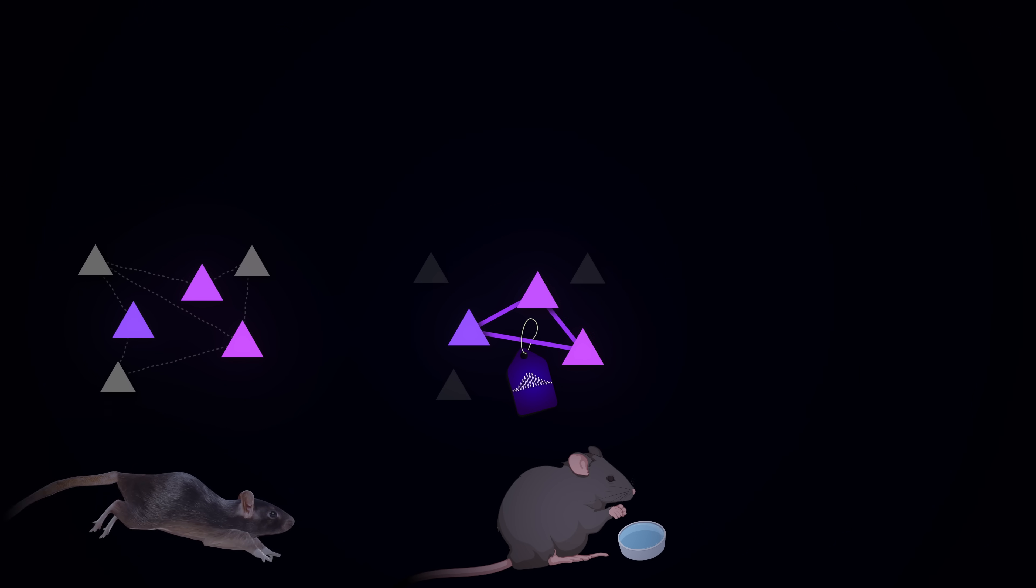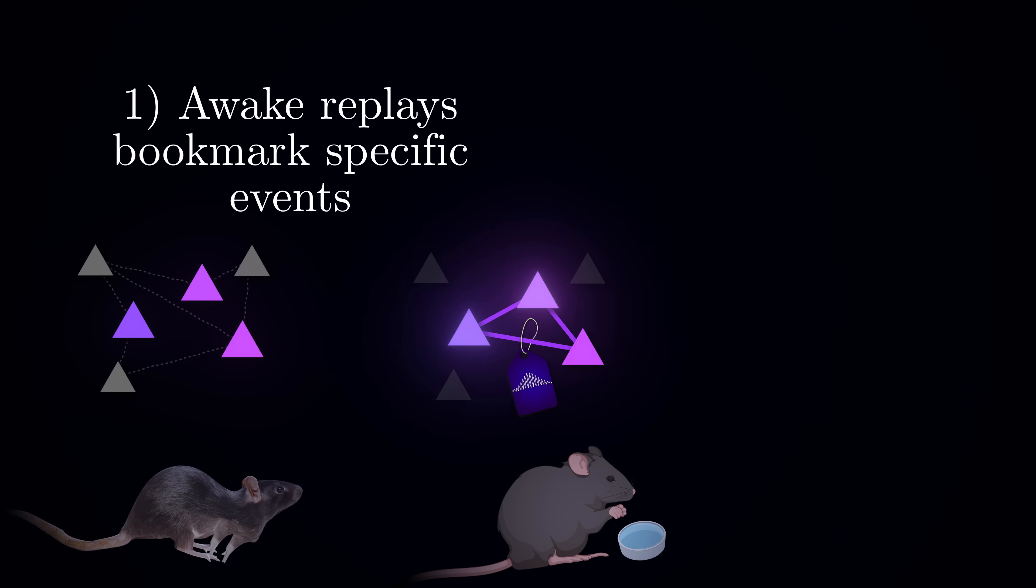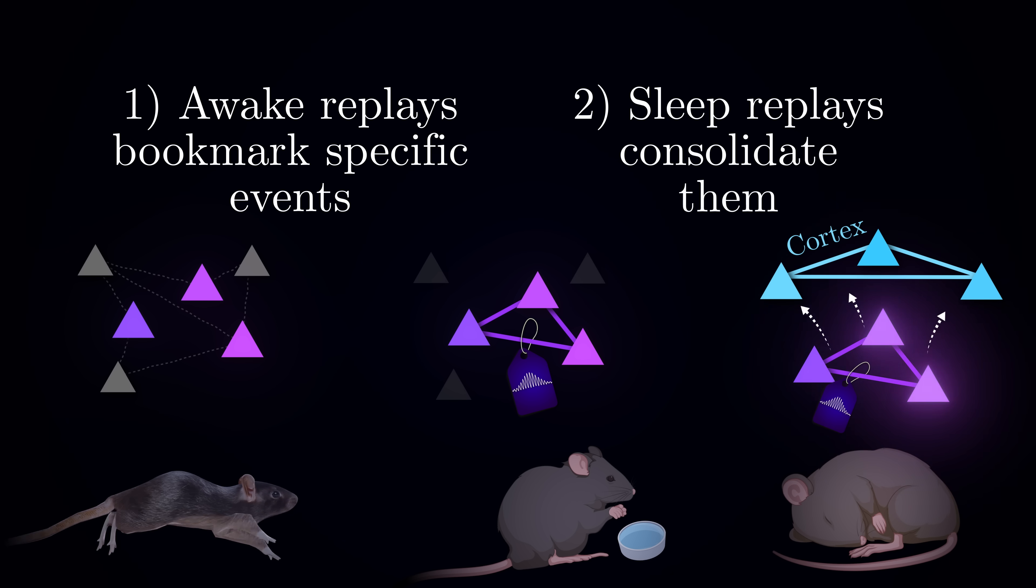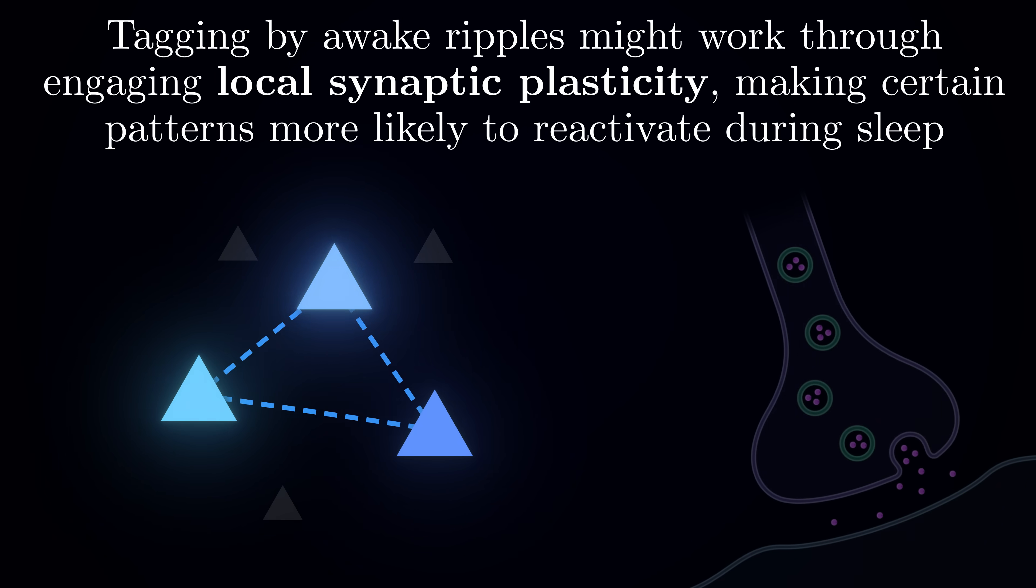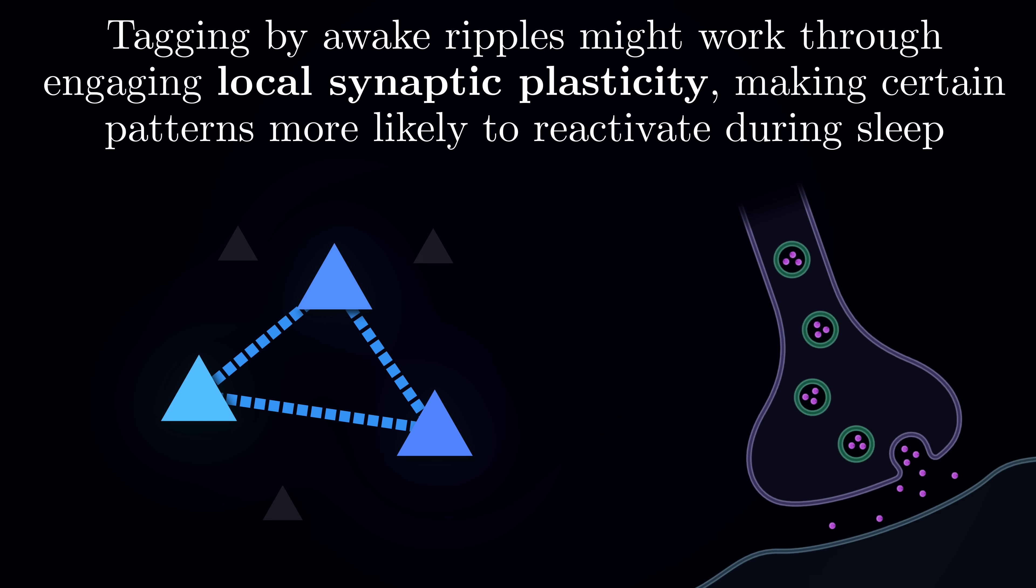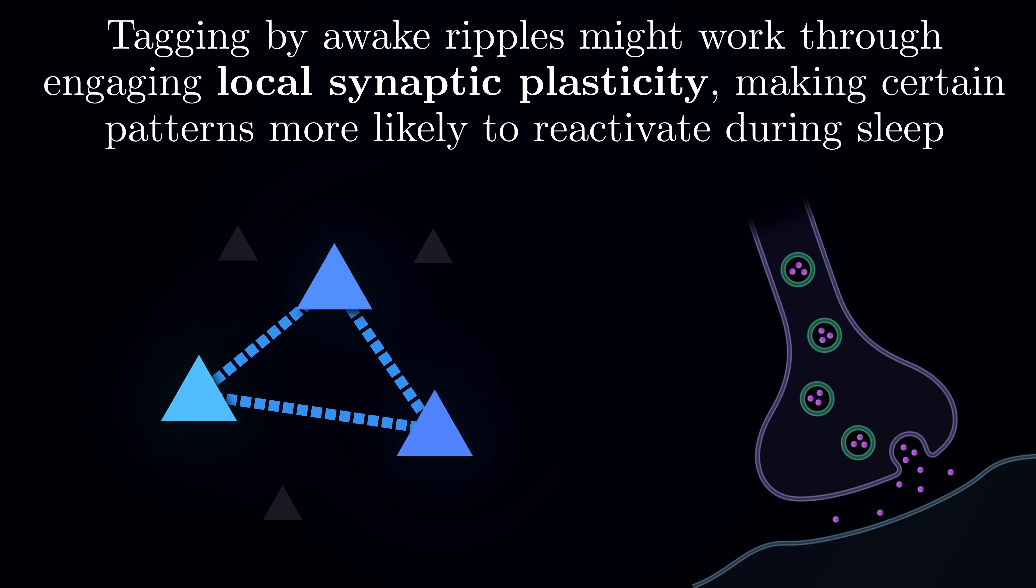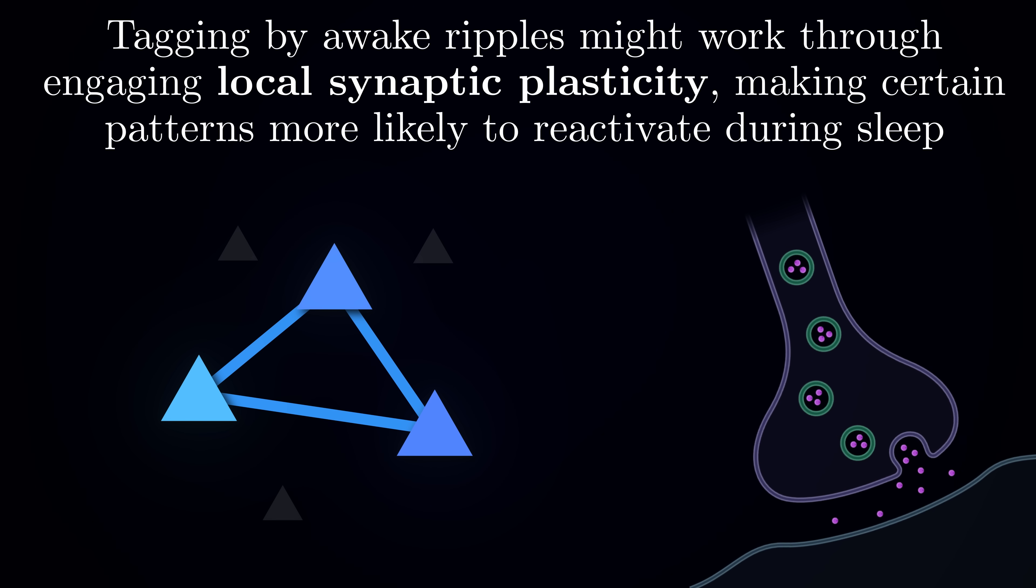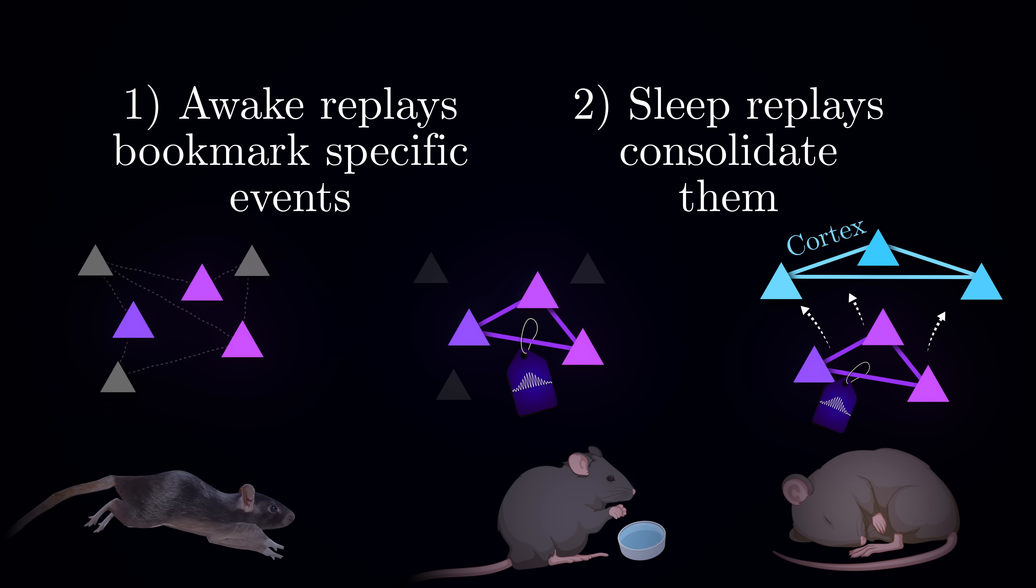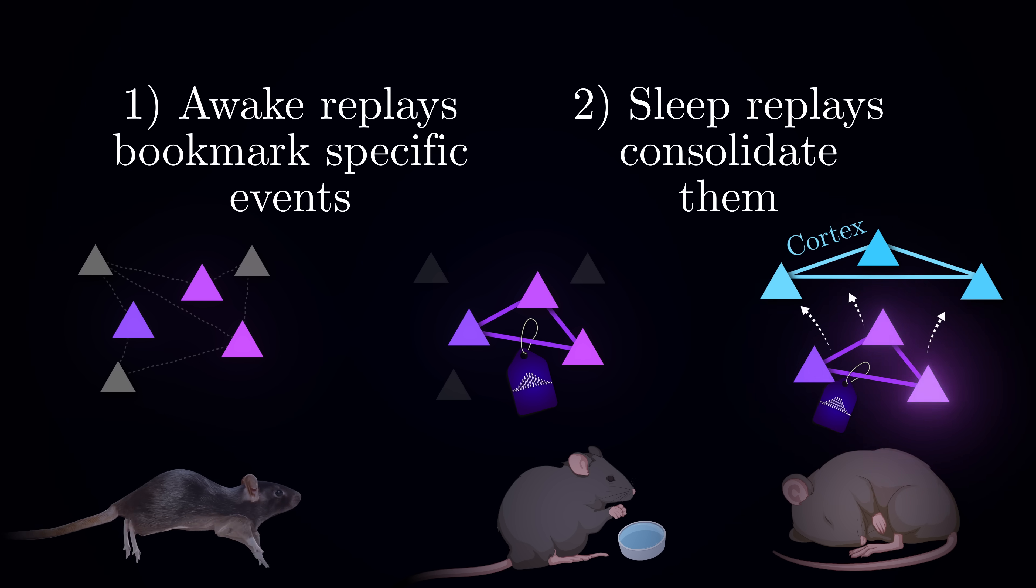So here is the elegant solution the brain has evolved. Awake ripples identify and temporarily store important events in hippocampus circuits, like bookmarking key pages in a book. Then, during sleep, when conditions are right for consolidation, these bookmarked patterns get repeatedly reactivated and transferred to cortical networks for permanent storage. While the exact cellular mechanisms of this bookmarking are still under investigation, it is plausible that awake ripples trigger local synaptic plasticity within the hippocampus. These changes might alter the network's dynamics in a way that makes certain neural sequences more likely to reactivate during sleep ripples, like carving out preferred paths in the landscape of possible activity patterns. Such two-stage process ensures that important memories get selected during wakefulness and properly consolidated during sleep, when the hippocampus can fully dedicate itself to the task of memory transfer.